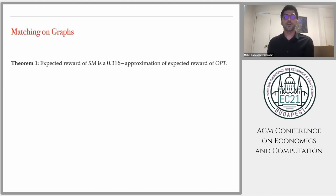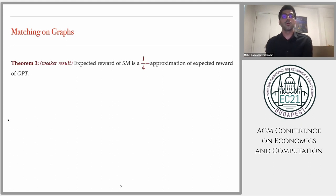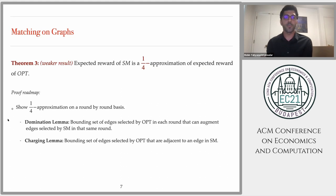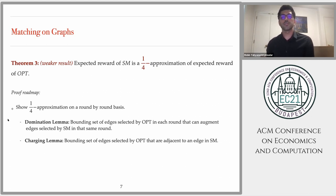For the remainder of this talk, I'm going to talk about the proof of Theorem 1. We will first show a weaker version of the theorem that gives us the intuition we need for the proof: that the expected reward of stable matching is a one-fourth approximation of the expected reward of optimum. The proof idea is to show a stronger argument — proving the one-fourth approximation on a round-by-round basis, meaning stable matching achieves at least a one-fourth approximation of optimum in every single round.